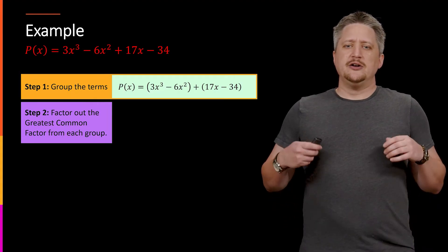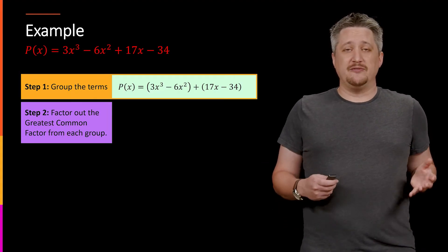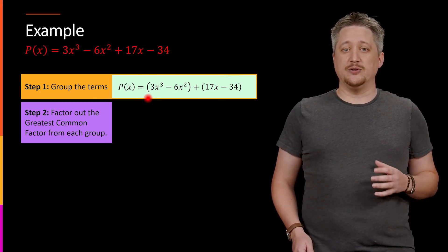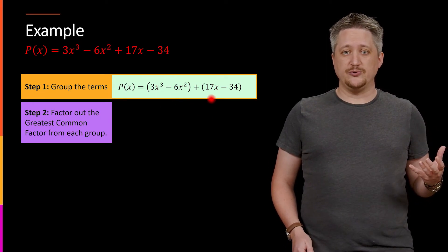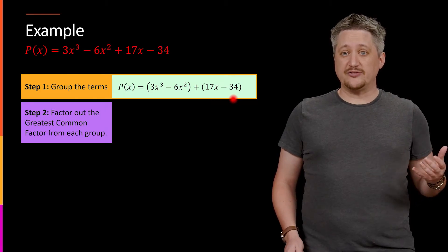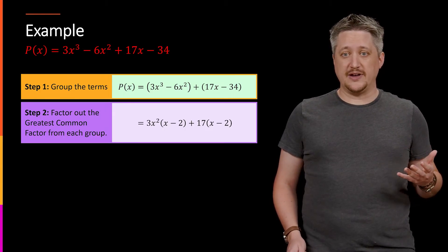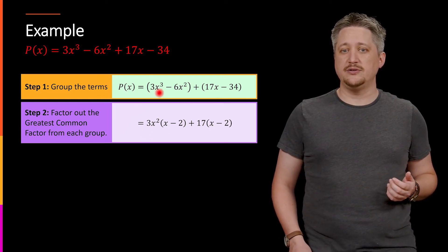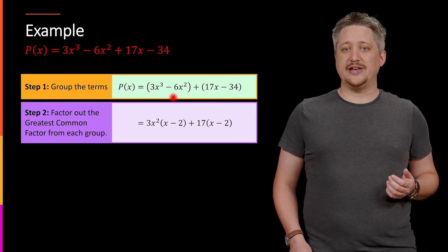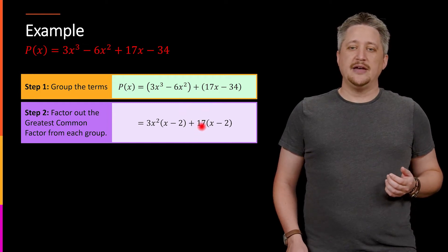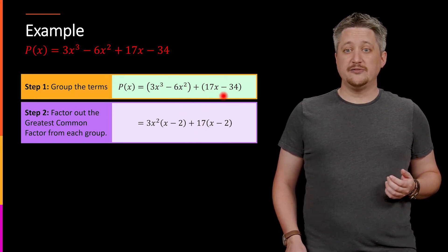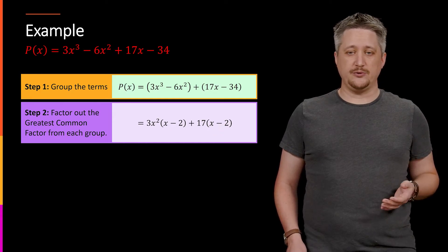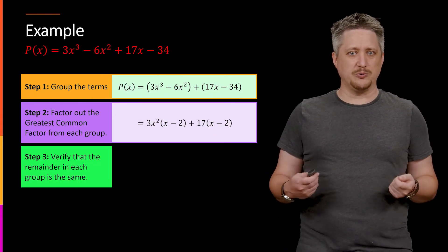Next. So now we want to factor out the greatest common factor of each group. Here I would look at the first group and pull out whatever the greatest common factor of these two terms is. And then same with the last two terms, pull out the greatest common factor there. So doing that, I would pull out 3x² from that first one. That would leave me with just an x in the first term and a minus 2 in the second. And then I'd pull out that 17 from the second group. And that would also leave me with x minus 2.